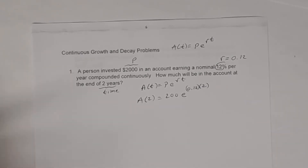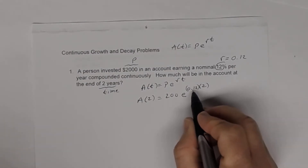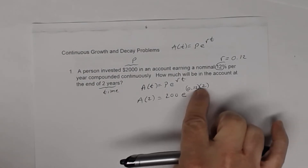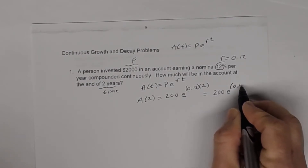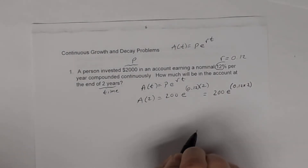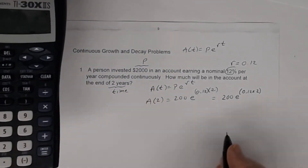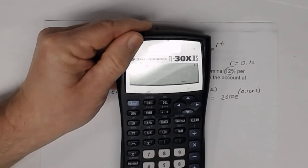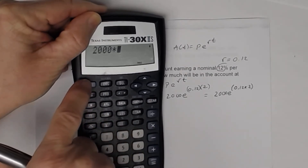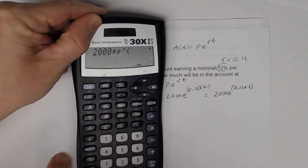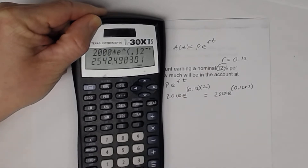It's very important on your calculator when computing this exponent that it's a product. The way I would do this is: 2,000 times e, then open parentheses, 0.12 times 2, close parentheses, then press equal. To get e on the calculator, press Second then LN — notice the parentheses appear automatically.